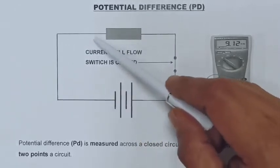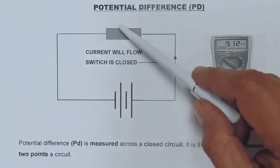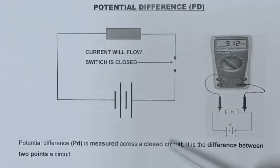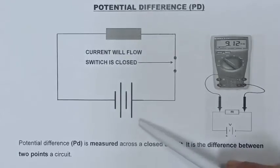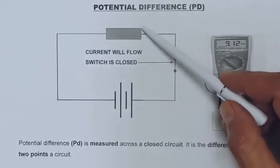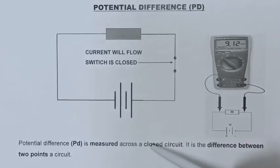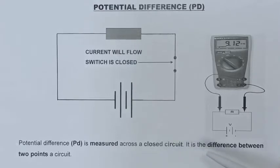I can now test my potential difference across the load in the circuit. The reason why I am explaining this before we go to the examples is so that you can see that there is a difference between the measured voltage of my EMF across the battery and the measured voltage across my load. We need to prove that when we do the calculations, otherwise something is wrong. So let's go ahead and do the two examples.